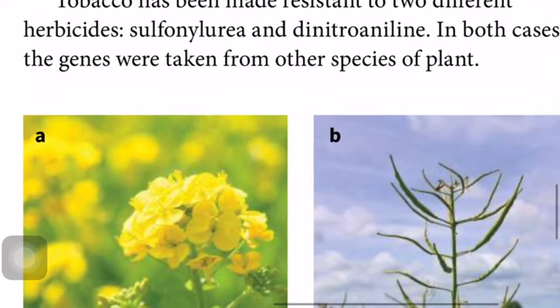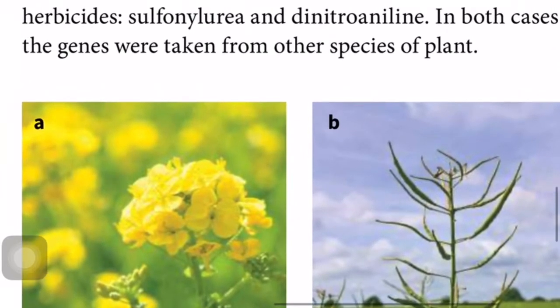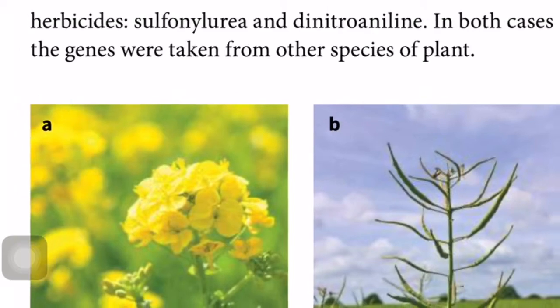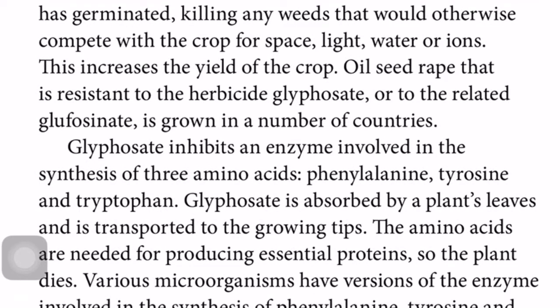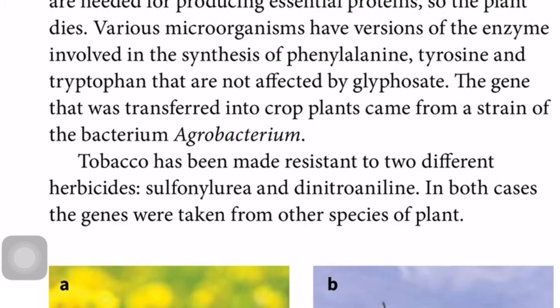Tobacco has been made resistant to two different herbicides: sulfonyl urea and dinitroaniline. In both cases, the genes were taken from other species of plant. Unlike the glyphosate case where the gene came from bacteria, for tobacco resistance the gene needed to be taken from other plant species.